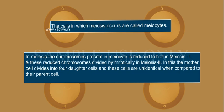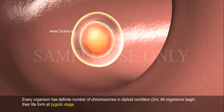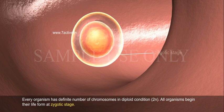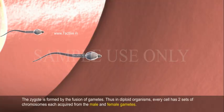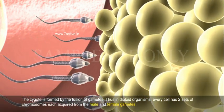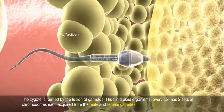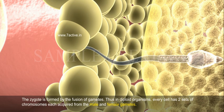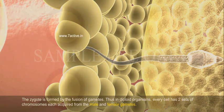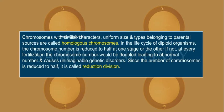In meiosis, the mother cell divides into four daughter cells, and these cells are unidentical when compared to their parent cell. Every organism has a definite number of chromosomes in diploid condition, and all organisms begin their life at the zygotic stage. The zygote is formed by the fusion of gametes. Thus, in diploid organisms, every cell has two sets of chromosomes, each acquired from the male and female gametes. Chromosomes with similar characters, uniform size and type, belonging to parental sources, are called homologous chromosomes.